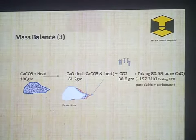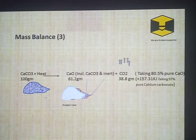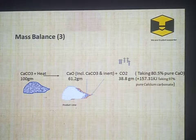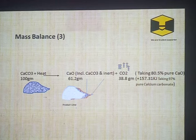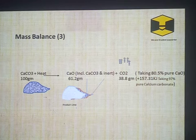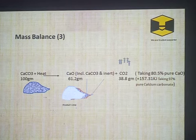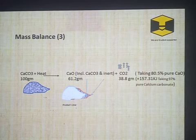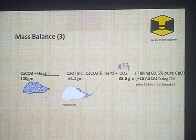Now consider Reaction Case 3 with the same raw material having 97% calcium carbonate content. Here, 100 grams of raw material decomposes into 61.2 grams of product — but this 61.2 grams is not completely calcium oxide.